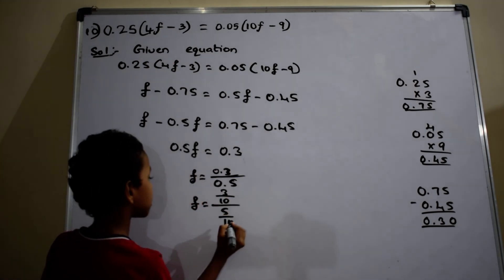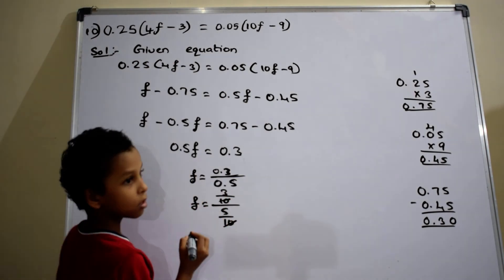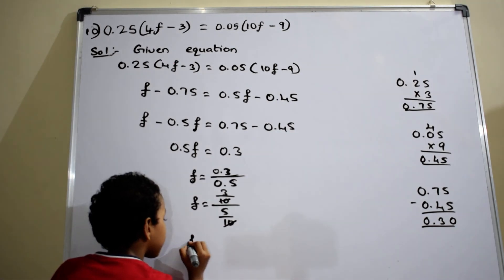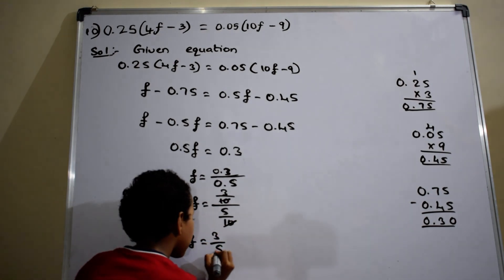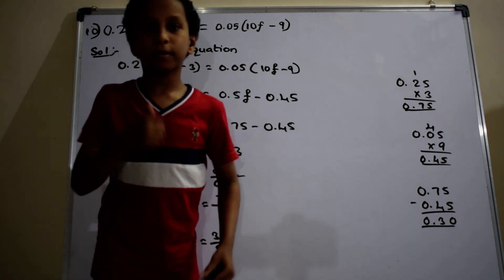Okay, the denominator denominator gets cancelled. f is equal to 3 by 5. The answer is f equals 3 by 5.